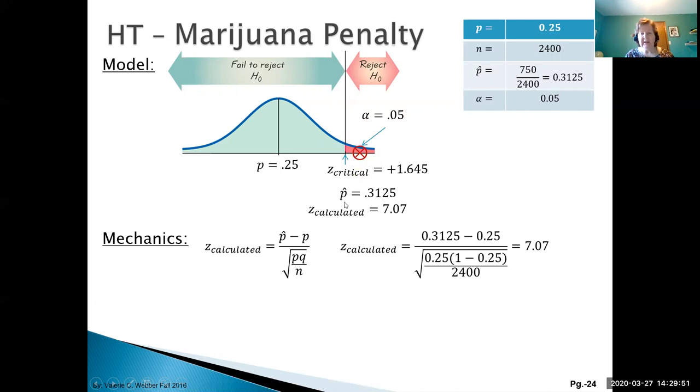When we calculate this to two decimal places, we get 7.07. We can locate our Z calculated that's associated with our sample statistic, and we can see that we're in the reject region because 7.07 is greater than 1.645.